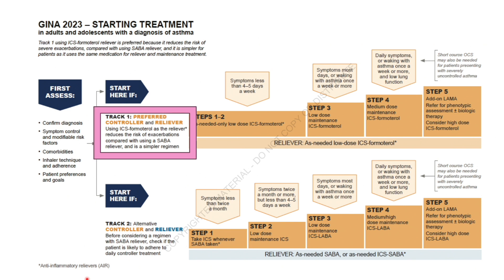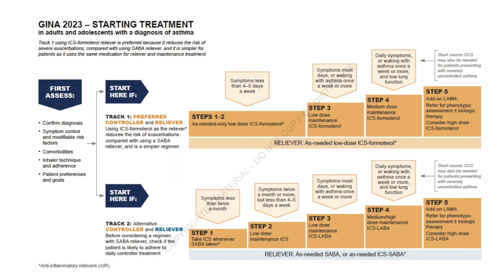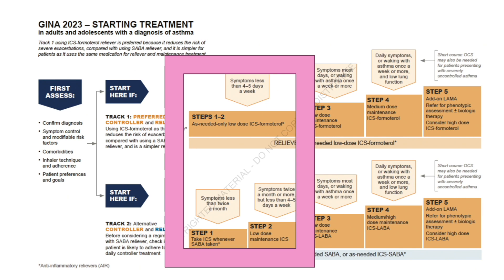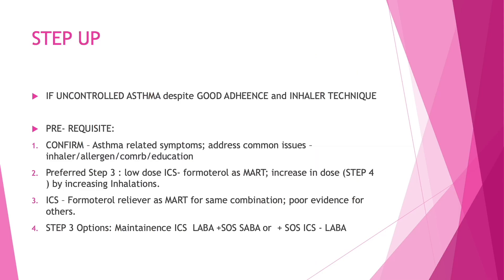Let's discuss Track 1 and Track 2 step-ups and management. When a patient on as-needed low-dose ICS-formoterol, ICS with SABA, or low-dose ICS maintenance needs to be stepped up, certain principles apply. If the patient's asthma is uncontrolled despite good adherence and good inhaler technique, you step up. A prerequisite is that symptoms should be due to asthma—rule out other causes before stepping up. Address common inhaler issues, allergen exposures, comorbidities, and whether the patient is educated about managing their asthma.